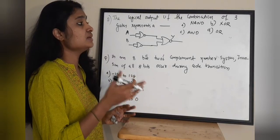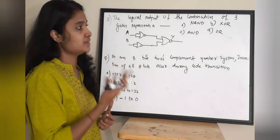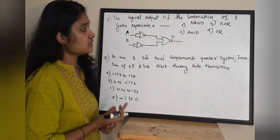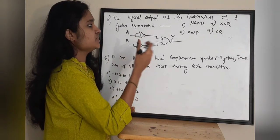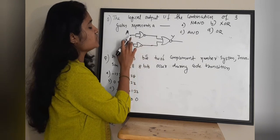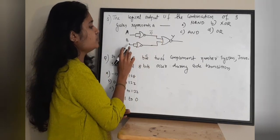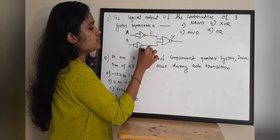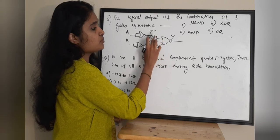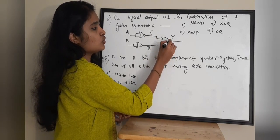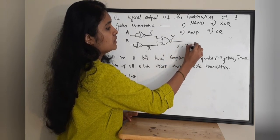Next question: the logical output of a combination of three gates represents what gate? Options are: A) NAND gate, B) XOR gate, C) AND gate, D) OR gate. In this circuit, if you short the input, the output of the first gate is A bar. The output of the next gate is B bar, and this is a NOR gate. So take the sum of A bar and B bar and take its NOR: the output Y equals (A bar + B bar) bar.